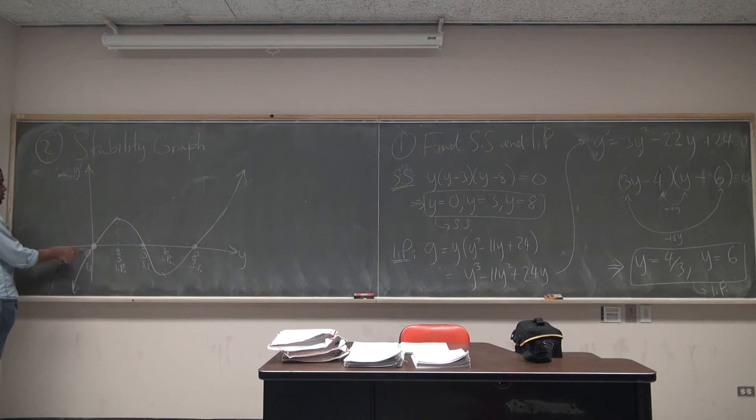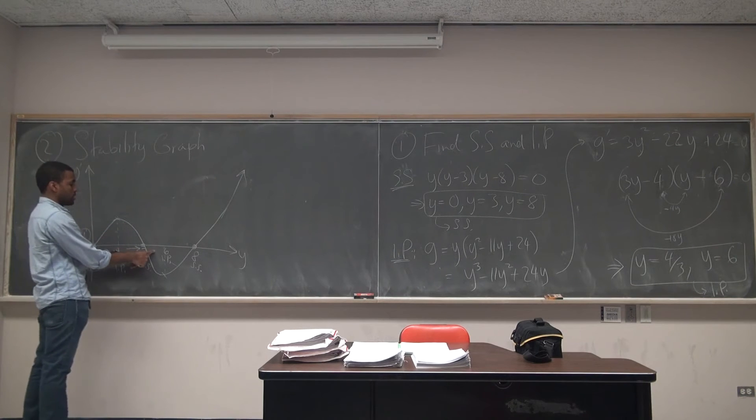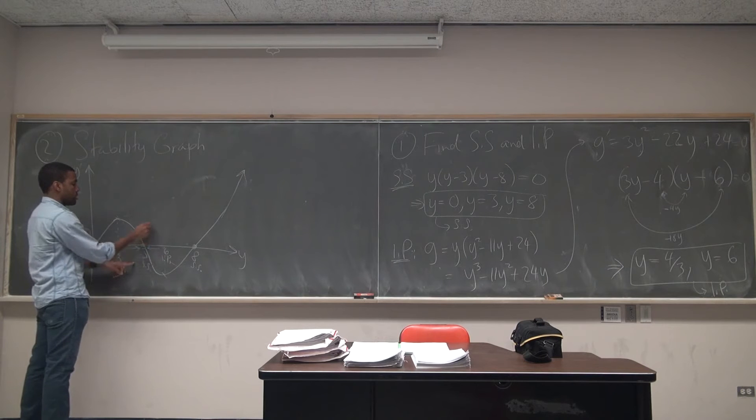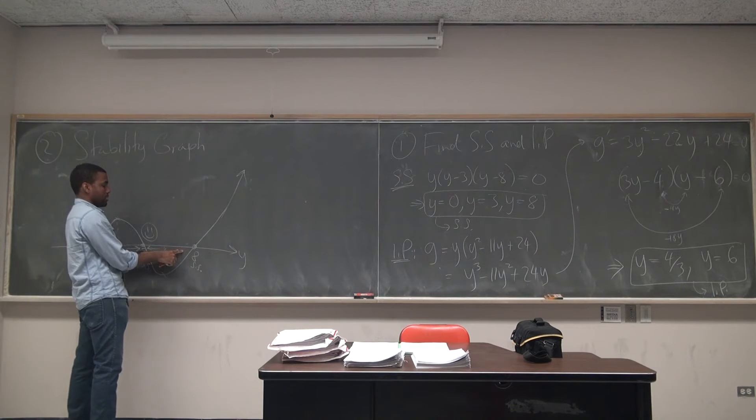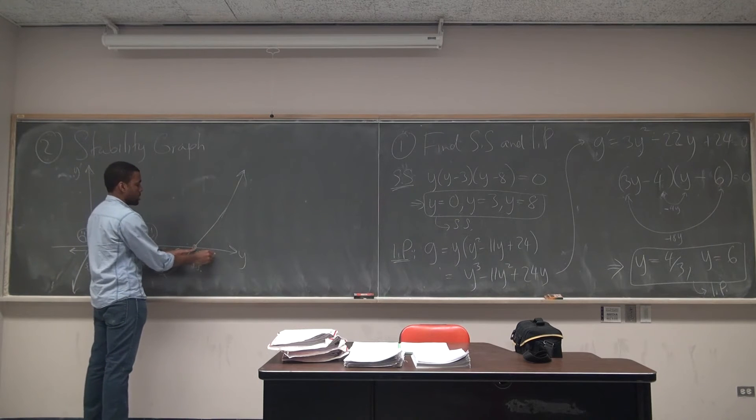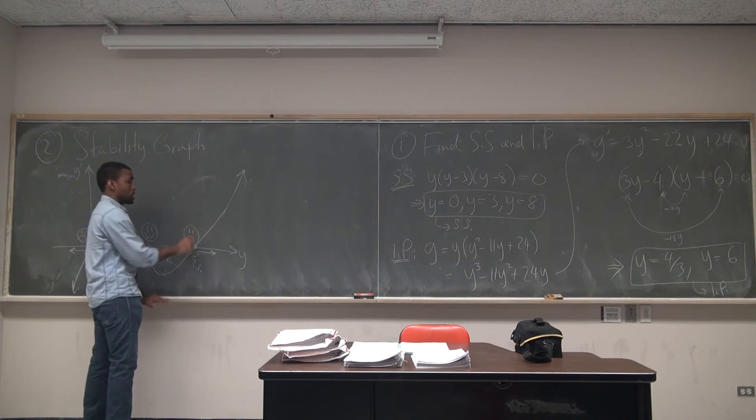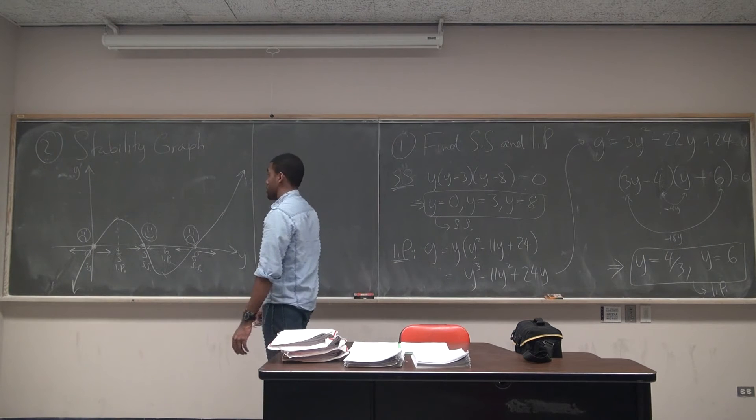For each steady state, what are we going to do? Three arrows. Three arrows. So over here, what's the arrow? Left. Going to the left because the graph is below the horizontal. Over here? To the right. Right because the graph is above the horizontal. So this is an unstable steady state. Over here? Right. Right because the graph is above the horizontal. Over here? Left. Left because the graph is below the horizontal. So this is a stable state. Over here? To the left? Left. Left because the graph is below the horizontal. Over here? Right. Right because the graph is above the horizontal. And we have another unstable state. That's called the stability graph, step three.